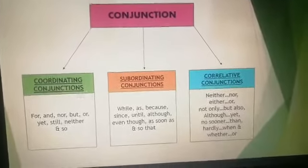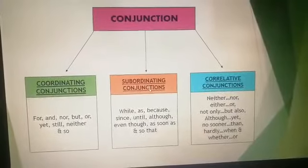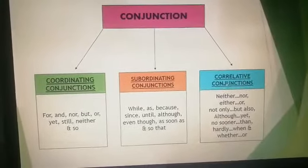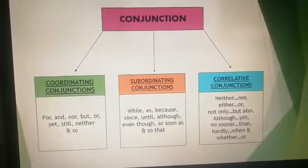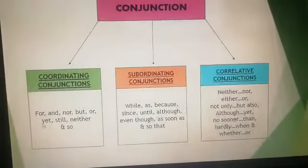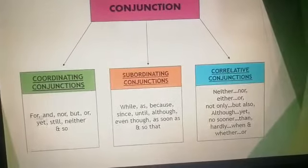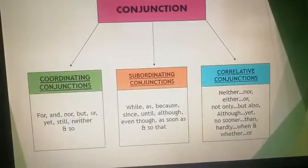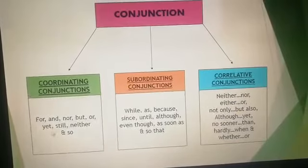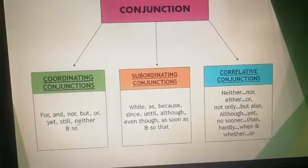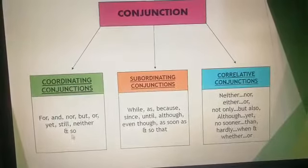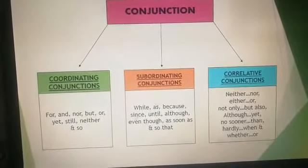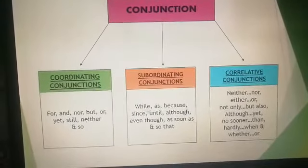Conjunctions are of three types: coordinating conjunctions, subordinating conjunctions, and correlative conjunctions. Some of the commonly used coordinating conjunctions are: for, and, nor, but, or, yet, still, neither, so.